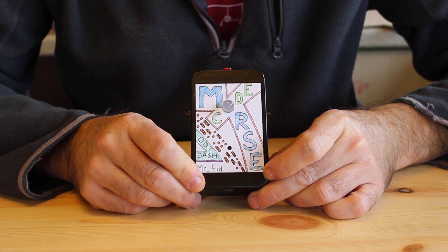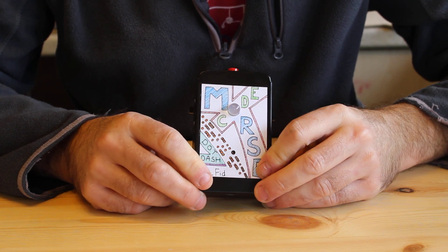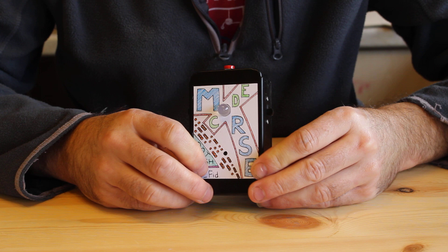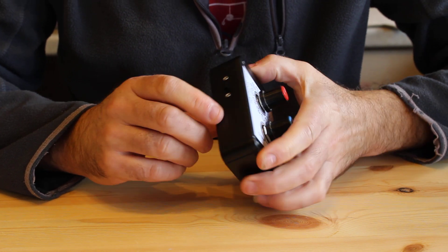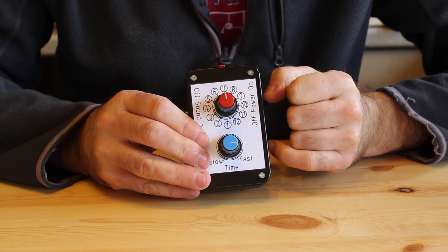This is my Morse code unit. You can see it's got a nice big 10mm tri-color LED on the front, so you can change color if you wish. It's also got a sounder down here that can be turned on and off using this switch, and the power is turned on and off there.